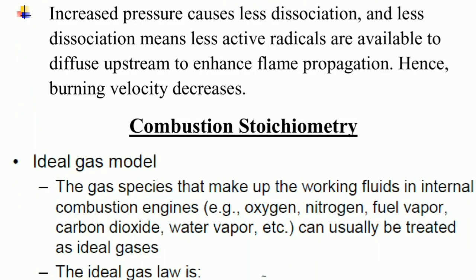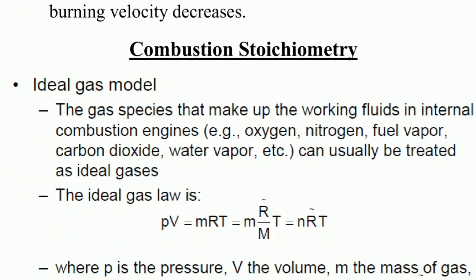Combustion stoichiometry: ideal gas model. The gas species that make up the working fluids in internal combustion engines, such as oxygen, nitrogen, fuel vapor, carbon dioxide, water vapor, etc., can usually be treated as ideal gases. The ideal gas law is pV equals mRT, that is m/M times R/M times T, which equals nRT.